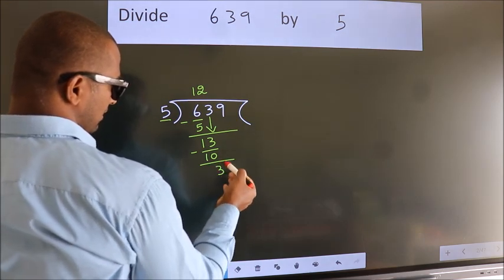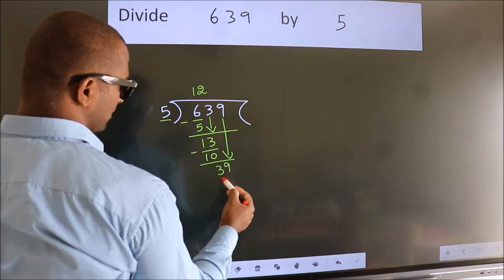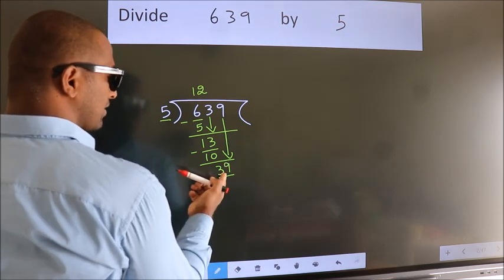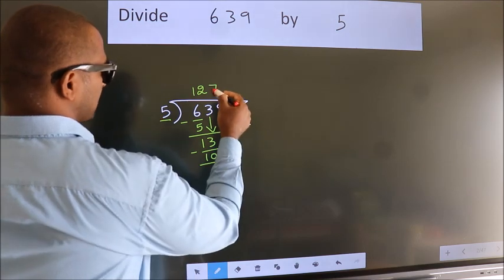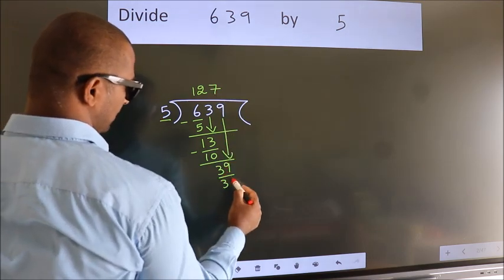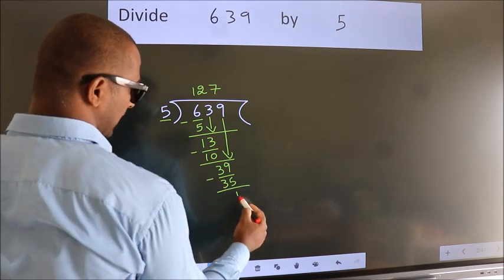After this, bring down the beside number. So 9 down. So 39. A number close to 39 in 5 table is 5 sevens 35. Now we subtract. We get 4.